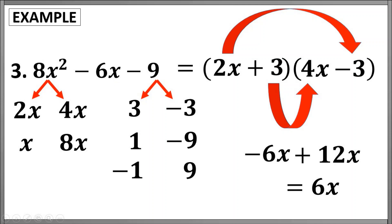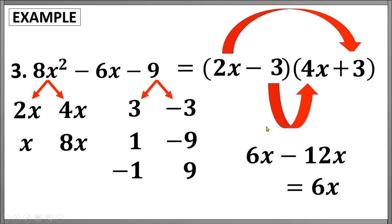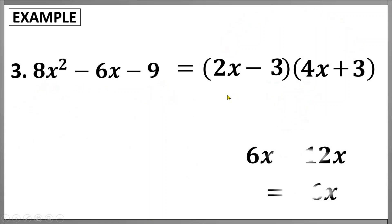But we need negative 6x. Since we only missed the sign, we will again manipulate the operations of our binomial factors. Let's try interchanging plus 3 and minus 3. We write 2x minus 3 for our first binomial factor and 4x plus 3 for our second. Multiplying the outers: 2x times 3 gives positive 6x. For the inner terms, negative 3 times 4x gives negative 12x. Simplifying, we get negative 6x, which is the correct middle term. The correct factors are 2x minus 3 and 4x plus 3.